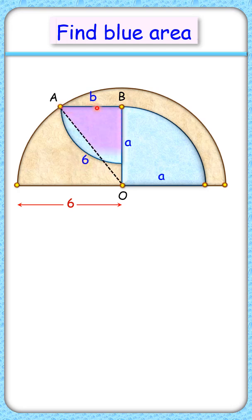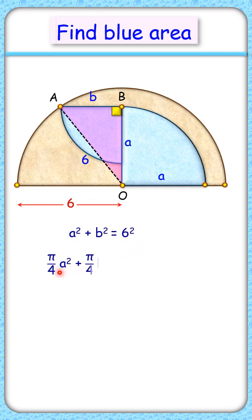Now in triangle ABO, angle B is 90 degrees. Applying the Pythagorean theorem gives us a relation: A² + B² = 6². Multiplying both sides by π/4, we get the equation for the quadrant areas.